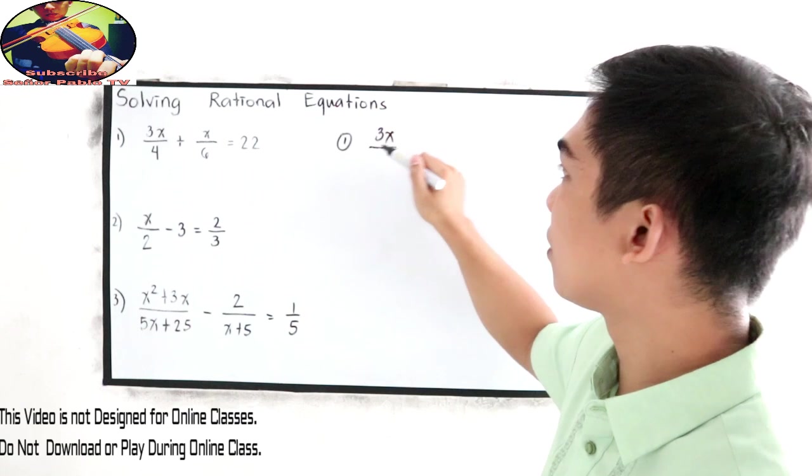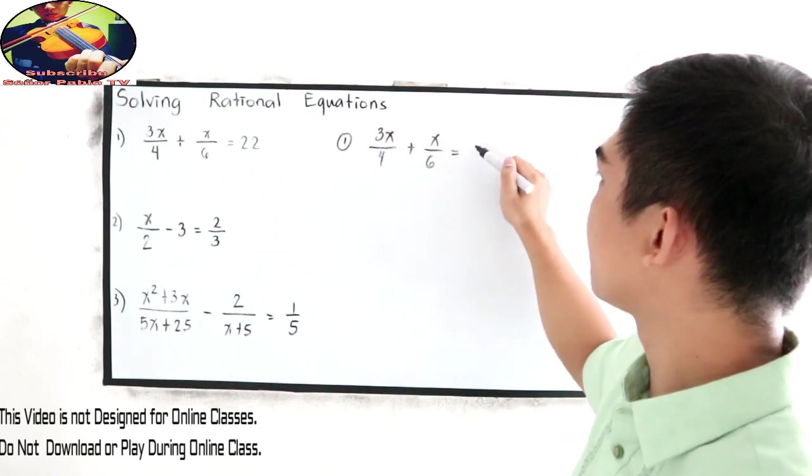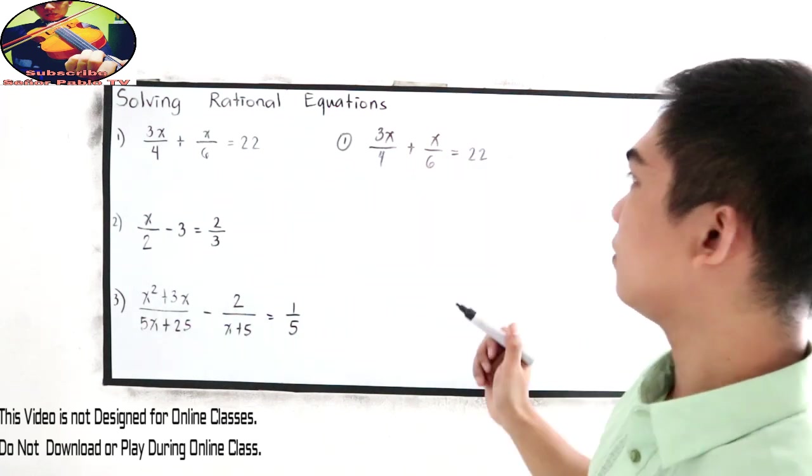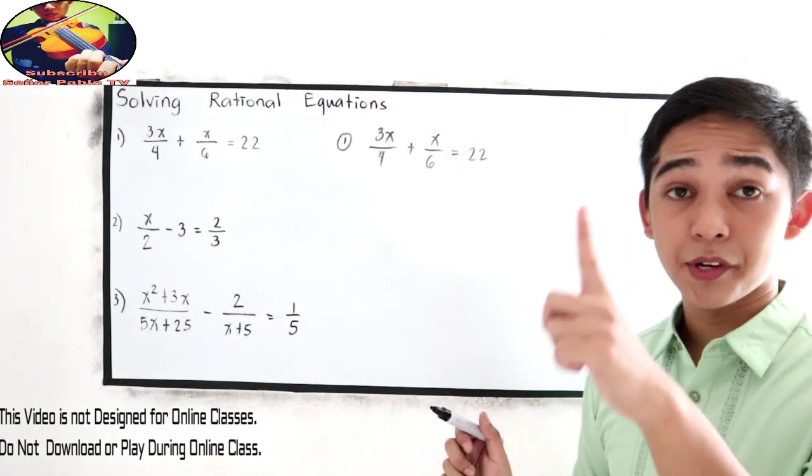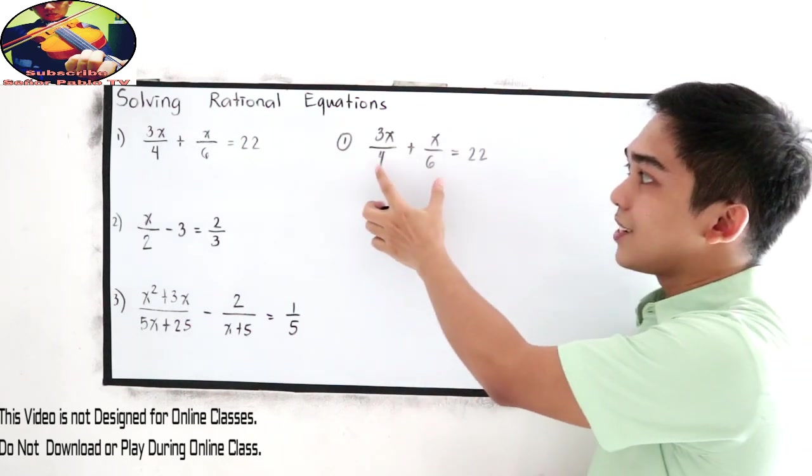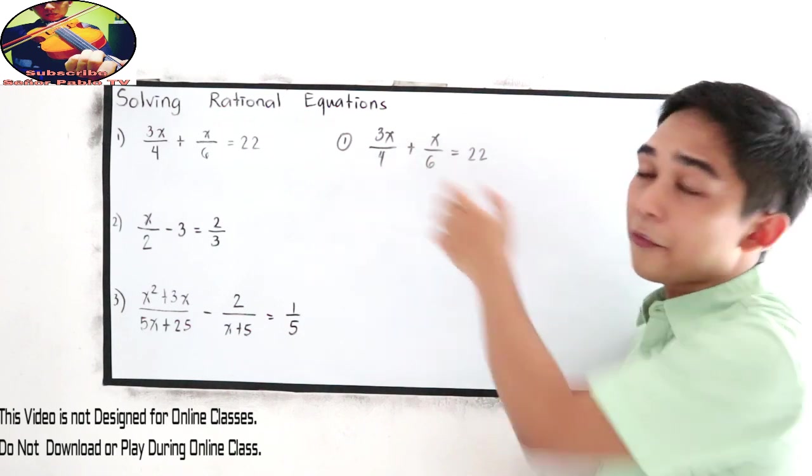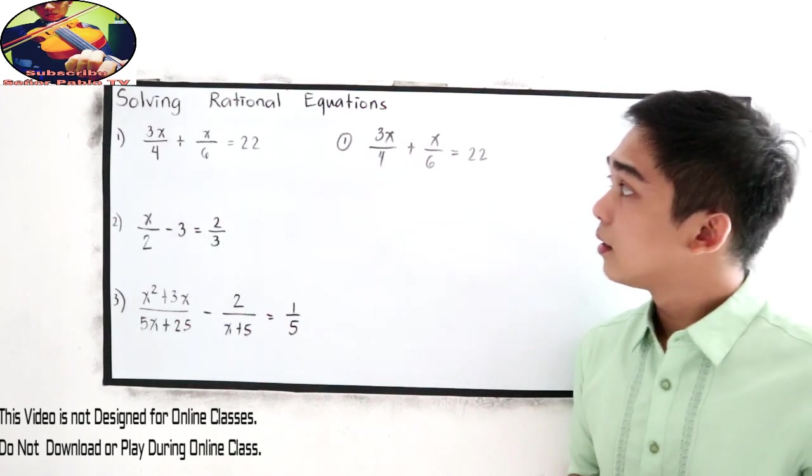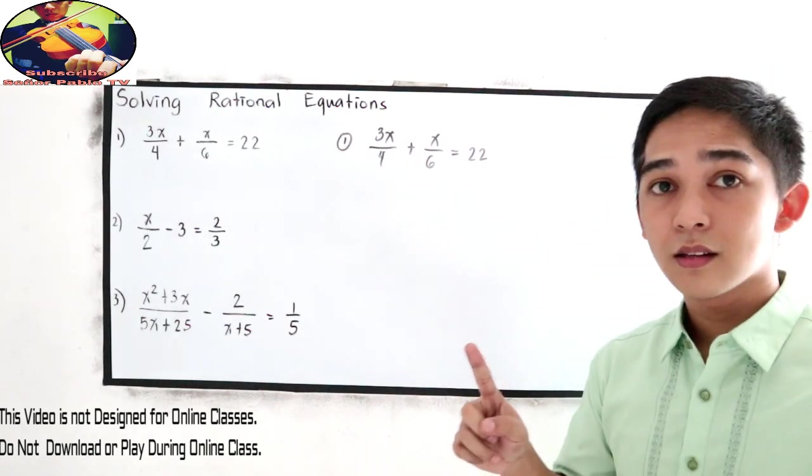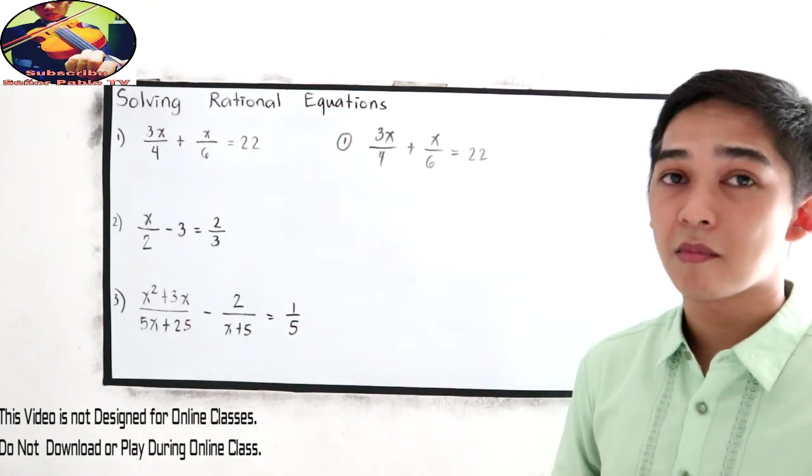3x all over 4 plus x over 6 is equal to 22. Let's start our first method. Since this is a fraction or rational, get the common denominator, the LCD, least common denominator.